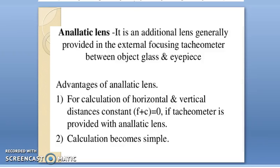Till now we have discussed different basic concepts of tachymetry, the instruments used for tachymetry, and the different types of telescopes used in tachymetry. In that, we discussed the external focusing telescope which is fitted with an analytic lens. This type of telescope is commonly used.